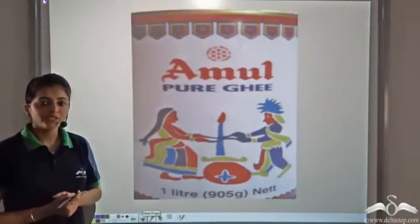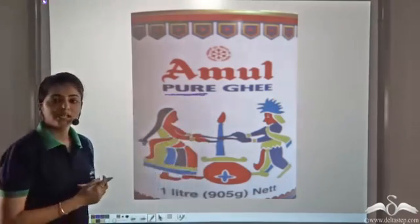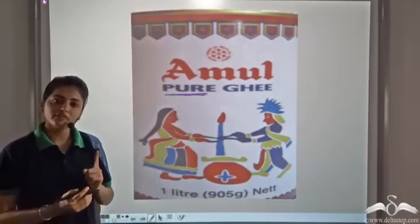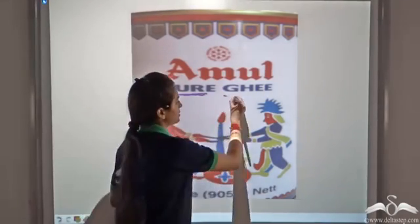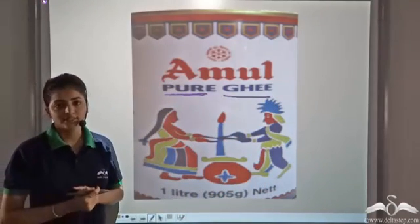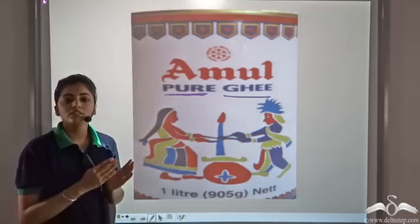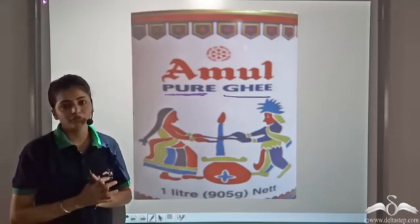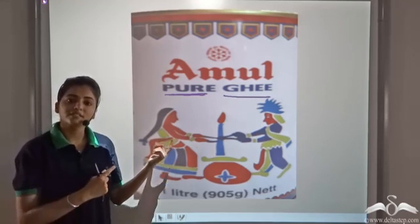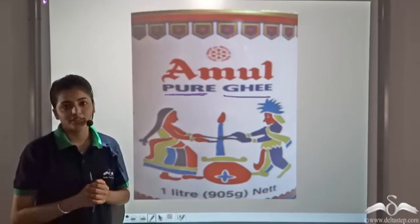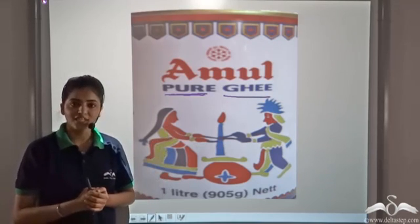Now if you see 'pure' written on a bottle of ghee, does this mean that it is made up of only one kind of particles? No. Ghee is made up of more than one kind of particles. But when we use it in daily terms, 'pure' means that it is not containing any harmful substances. But chemically speaking, it is impure, as it is made up of more than one kind of particles. So do not confuse this 'pure' with the pure that we use in chemistry.